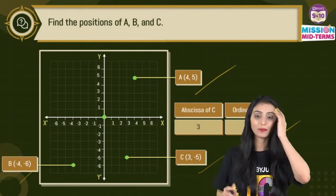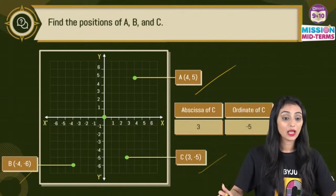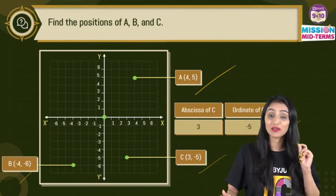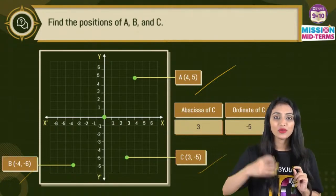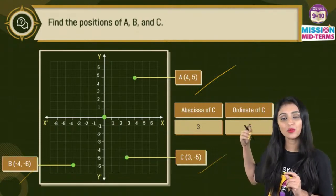Pehle x aata hai, fir y aata hai. Bracket is compulsory, right? Whenever you're writing a coordinate, bracket is compulsory. That's how we, I mean, that's how the, that's what the representation of a coordinate is.